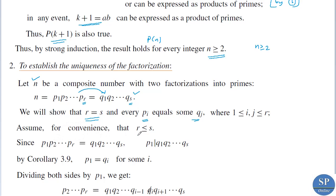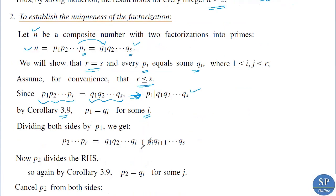Assume for convenience that r ≤ s. Since p₁·p₂·…·pᵣ = q₁·q₂·…·qₛ, p₁ divides p₁·p₂·…·pᵣ. Therefore p₁ divides q₁·q₂·…·qₛ. By the previous corollary, p₁ equals qᵢ for some i. Now, dividing both sides by p₁ — since one of the qᵢ equals p₁ — the left-hand side becomes p₂·p₃·…·pᵣ, and the right-hand side becomes q₁·q₂·…·qᵢ₋₁·qᵢ₊₁·…·qₛ.